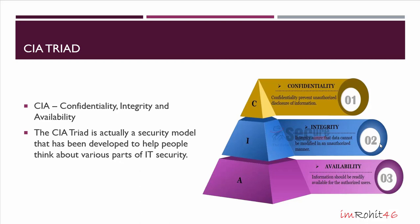Hey guys, I'm Rohit. In this video we are going to talk about the CIA triad. CIA stands for confidentiality, integrity, and availability. It is a model designed to guide policies for information security within an organization. The model is also sometimes referred to as the AIC triad — availability, integrity, and confidentiality — to avoid confusion with the Central Intelligence Agency. The elements of the triad are considered the three most crucial components of security.